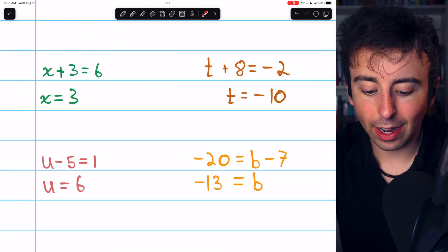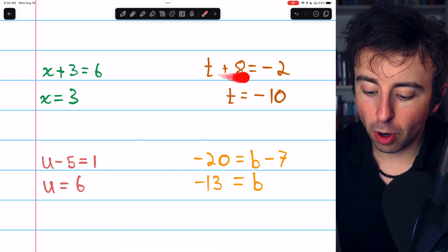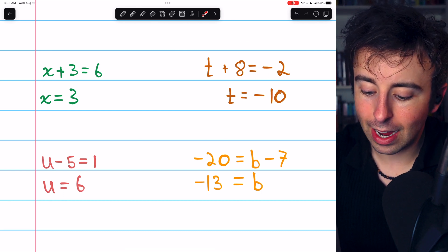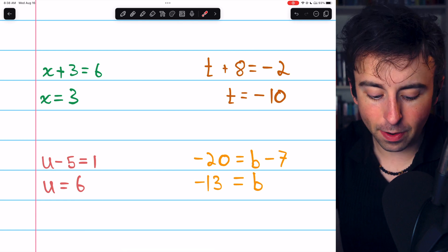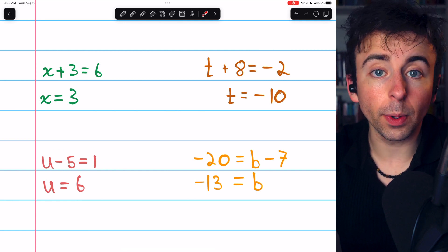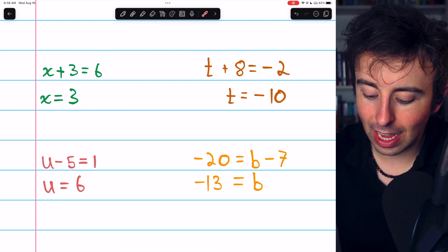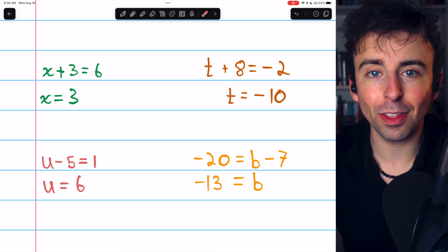In this problem, we subtract 3 from both sides, which gives us x equals 3. In this problem, we subtract 8 from both sides, giving t equals negative 10. In this problem, we add 5 to both sides to get u equals 6, and in this problem, we add 7 to both sides to get b equals negative 13.